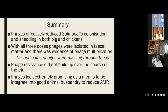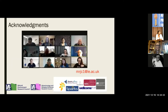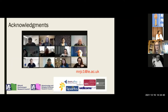To summarise: phages effectively reduced salmonella colonisation and shedding both in pigs and chickens at all three doses. The phages were passing through the gut and multiplying at the site of infection, and we didn't see resistance building up. I hope you agree the phages look extremely promising as a means to integrate into good animal husbandry to reduce AMR and provide something for food producers to treat their animals. I'd like to acknowledge my lab, particularly Anisha, who drove every part of this project from finding the phages to the animal trials.